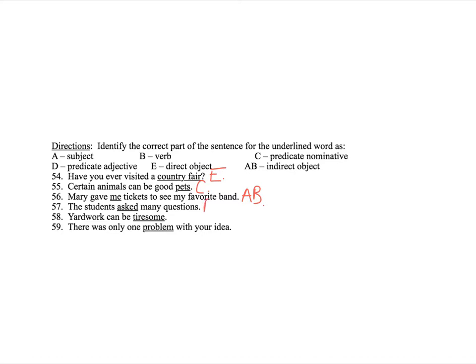The students asked many questions. Alright, asked is an action verb. Yard work can be tiresome. Alright, now can be. Notice how can be was the verb in 58 and can be is the verb in 55. Same thing. You have a linking verb here. But, instead of a noun that renames the subject, now you have an adjective that describes the subject. We call that a predicate adjective. An adjective following a linking verb that relates back to the subject. So, yard work. We could describe that with the adjective tiresome. There was only one problem with your idea. Now, interestingly, this is something to talk about here. Words like here and there are never subjects. Here and there are called expletives. They're placeholders. So, whenever you say here is or here are or there was or there were or things like that. Those are never, here and there are never subjects. The subject actually follows the verb. The state of being verb. So, problem is actually the subject. It's what your sentence is about.